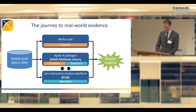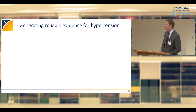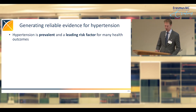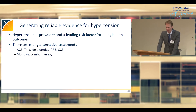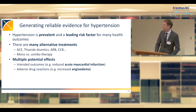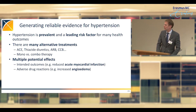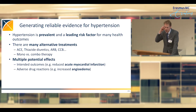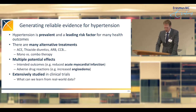From within R, you can also interact with features available in Atlas. As an example of what these tools can do, we'll be showing evidence generated around hypertension — a prevalent disease and leading risk factor for many health outcomes. There are many alternative treatments available, many different drug classes. You can go for monotherapy or combo therapy, and each treatment has multiple potential effects, some intended and some unintended adverse reactions.